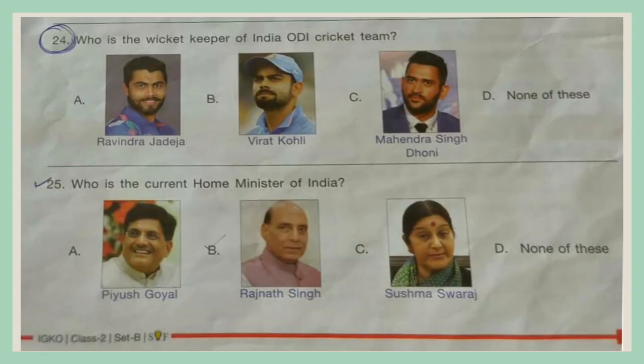Question 24. Who is the wicketkeeper of India's ODI cricket team? A. Ravindra Jadeja, B. Virat Kohli, C. Mahendra Singh Dhoni, D. None of these.